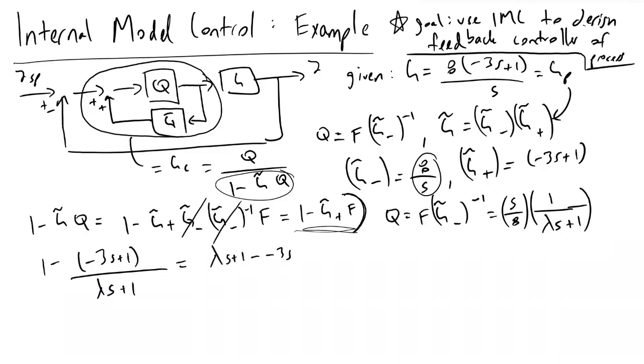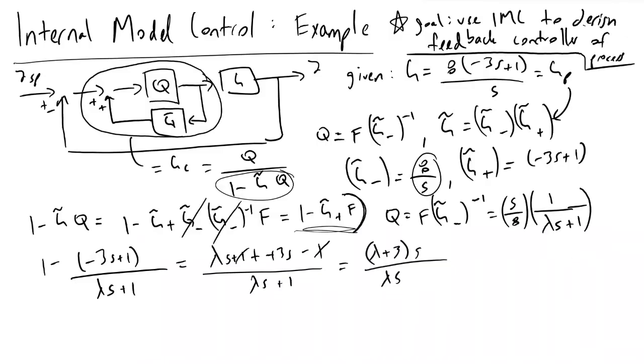And this is equal to lambda S plus 1 minus minus 3s, minus 3s, and then minus 1, divided by lambda S plus 1 divided by lambda S plus 1. So we can add this and cancel these ones. And what we will find is that we will have lambda plus 3 times S divided by lambda S plus 1.